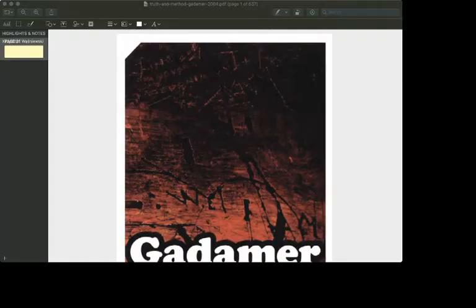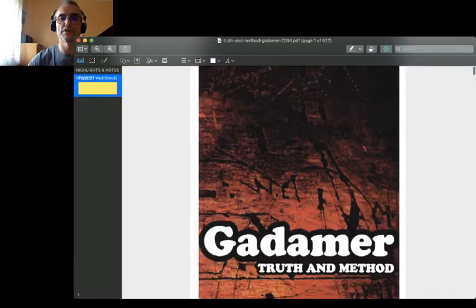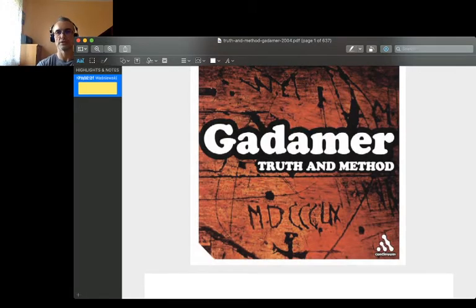Hans-Georg Gadamer's Truth and Method. I already made reference to that book in my first video devoted to the philosophy of science. Hans-Georg Gadamer was one of the most prominent German philosophers in the field that we call hermeneutical philosophy. It is a more developed version of phenomenology, and his philosophical passion was to investigate the nature of human understanding.